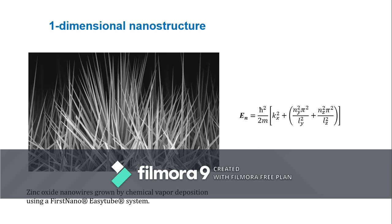Now let us discuss about one-dimensional nanostructures. As the name suggests, the structures are like nanorods and nanotubes, extended along one direction while restricted in the other two dimensions. The energy of the electron is also quantized in two directions, and the degree of freedom of the electrons is 1. The energy expression is En = (ℏ²/2m)kx², where kx is continuous, and the energy along the y and z directions is quantized.